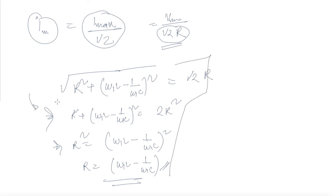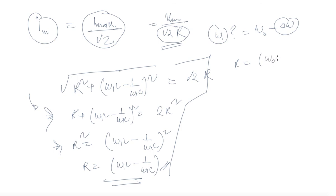Now, omega_1 was taken as omega_naught minus del_omega. Substituting this value, R equals (omega_naught minus del_omega)·L minus 1/((omega_naught minus del_omega)·C).